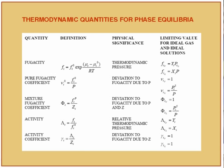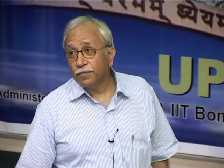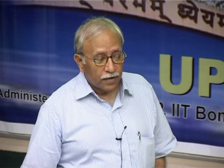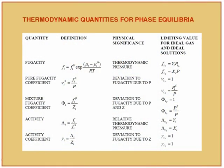Fugacity is easily related to readily understood physical quantities. It approaches a finite value at low pressure — either the pressure for a pure component or the partial pressure for the ith component in a mixture. So this becomes a convenient property to measure alongside temperature and pressure. Here is a quick review of fugacity and some related properties which come in handy for calculations.